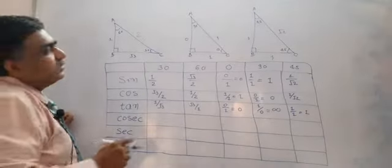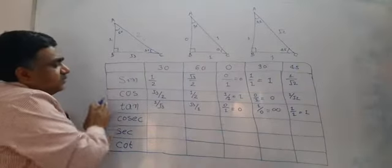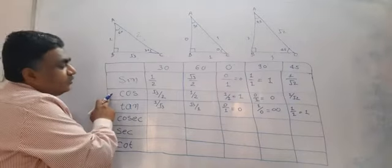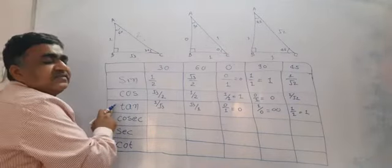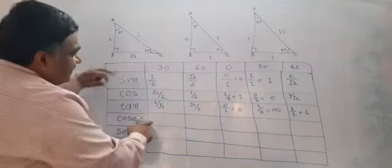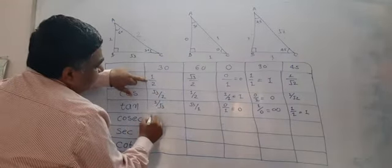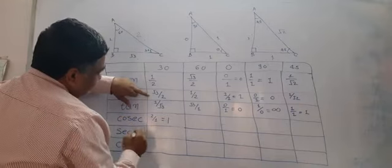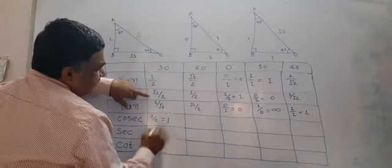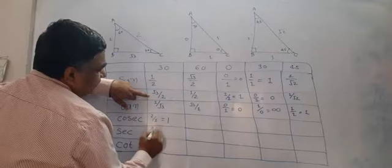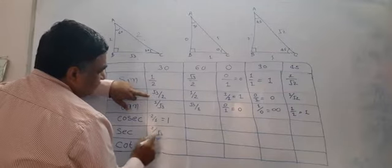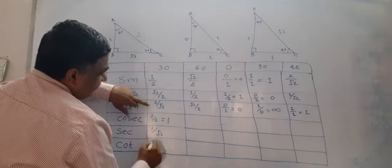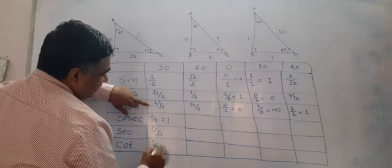Now, cosecant is the inverse of sine, sine is the inverse of cosecant, and secant is the inverse of cosine, and cotangent is the inverse of tan. So cosec 0 gives 2 upon 1, which is 1. For sec 30, it is 2 upon root 3. For cot 30, it is root 3 upon 1, so it is root 3.